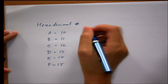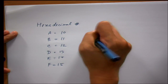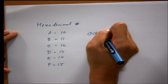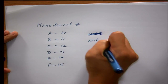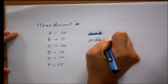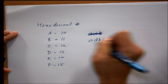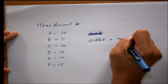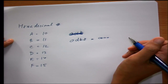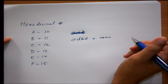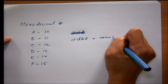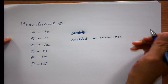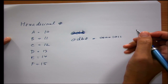So when you see a number like 0DB8, the digit 0 represents 0000 in binary, D is 13 which is 1101 in binary, B is 11 which is 1011 in binary, and 8 is 1000 in binary.